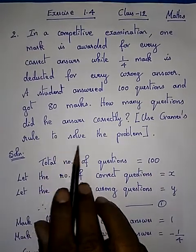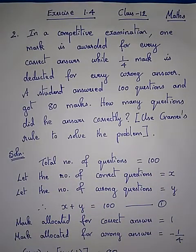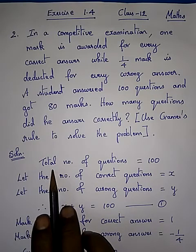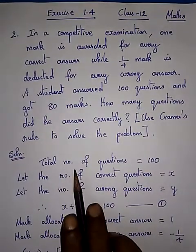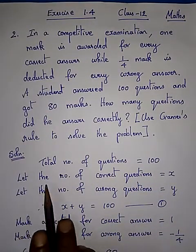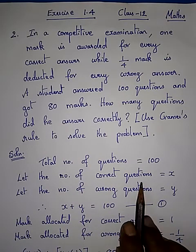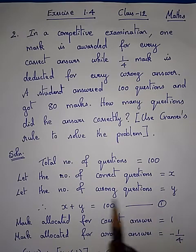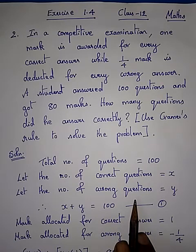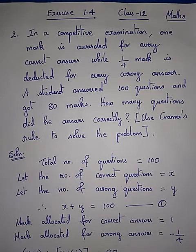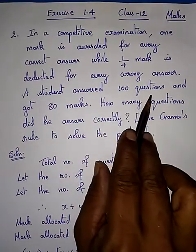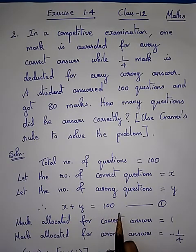Use Cramer's rule to solve the problem. The total number of questions answered by the student is 100. Let the number of correct questions be X and the number of wrong questions be Y. So the correct questions plus the wrong questions together equal 100, giving us the first equation: X + Y = 100.